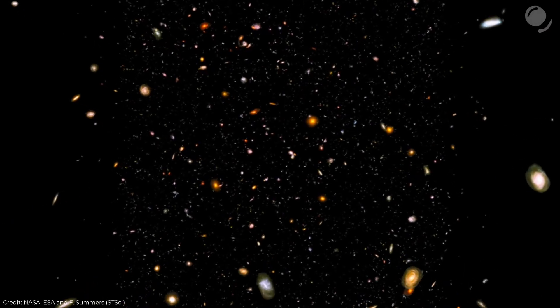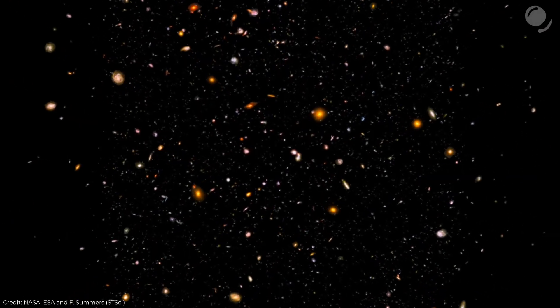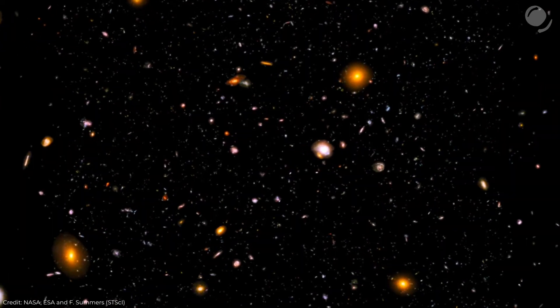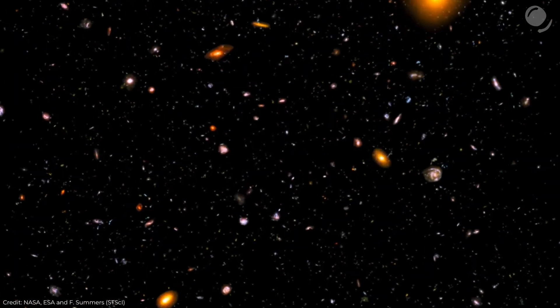We can only say with certainty that somewhere, very far away, the world is very different from what we see locally. Whether it is another universe or a different fabric of space-time, we don't know. Those are the words of cosmologist Alexander Kashlinsky. But are there actually reasons to say that and why does the scientist think so?